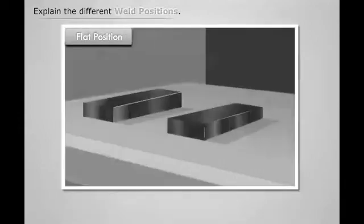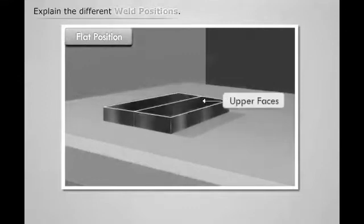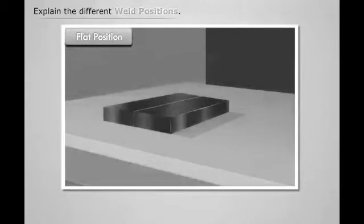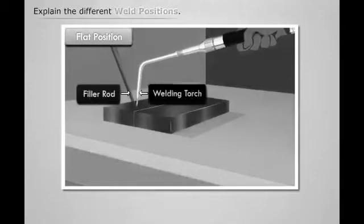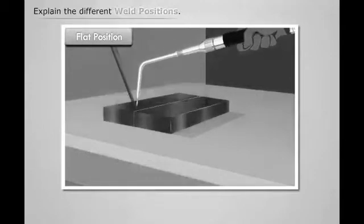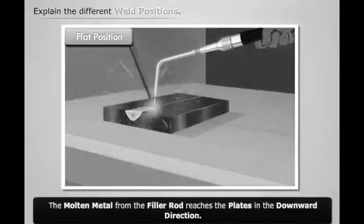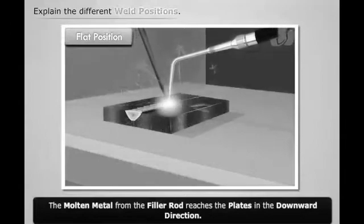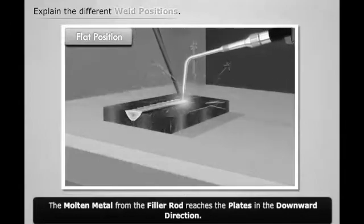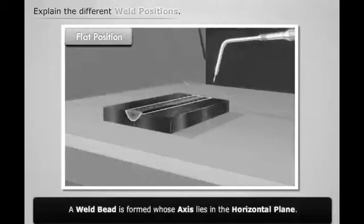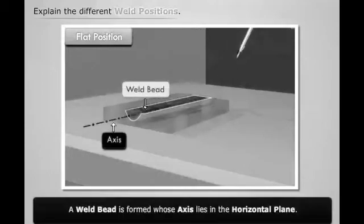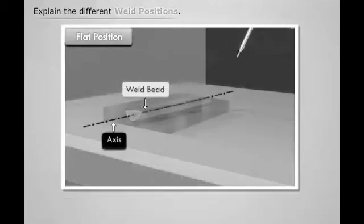Let's first discuss how to produce a weld whose alignment is flat. First, place the two metal plates in such a way that their upper faces lie in the horizontal plane. Now bring the welding torch and filler rod and start the welding process between the edges of the plates. We see that the molten metal from the filler rod reaches the plates in the downward direction, and finally a weld bead is formed whose axis lies in the horizontal plane.